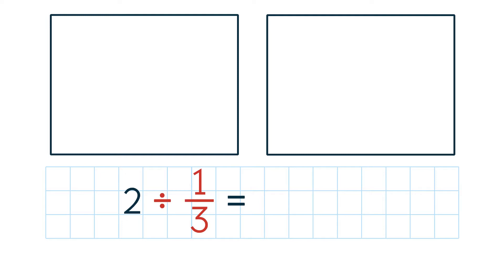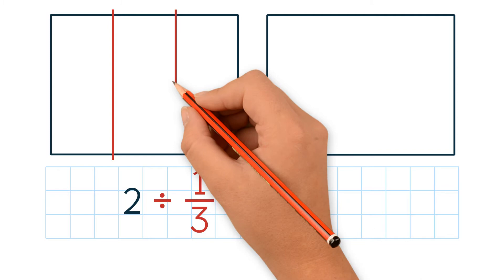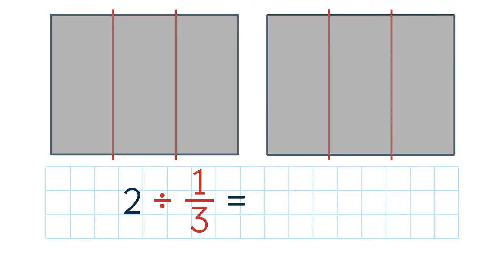The divisor is 1 3rd, so we have to divide each rectangle into thirds. Now we count the total number of thirds. We have 6 thirds.